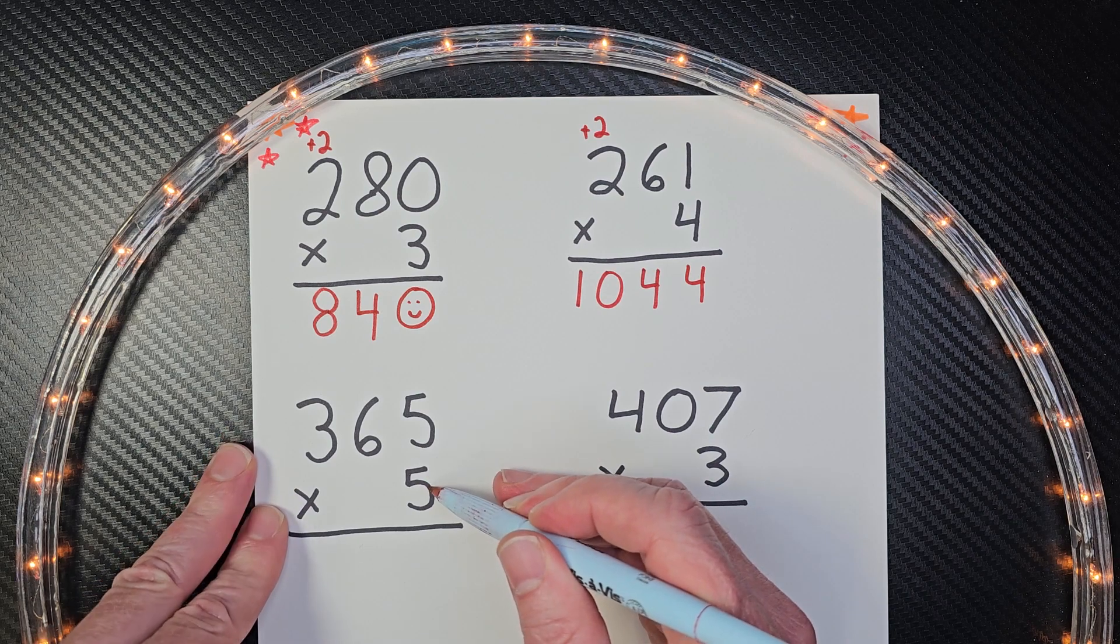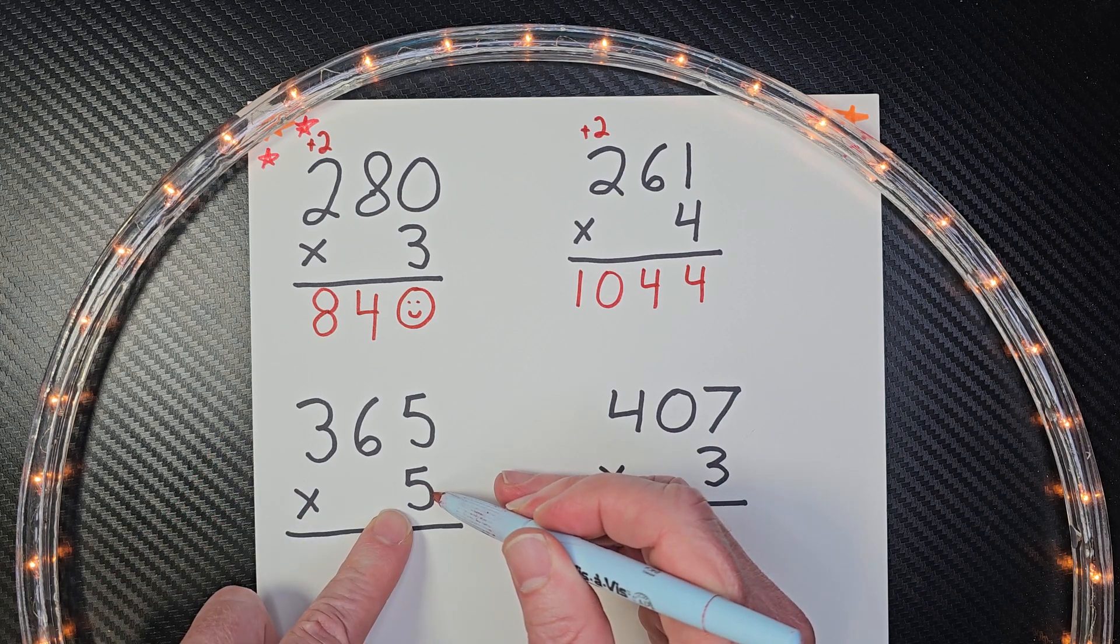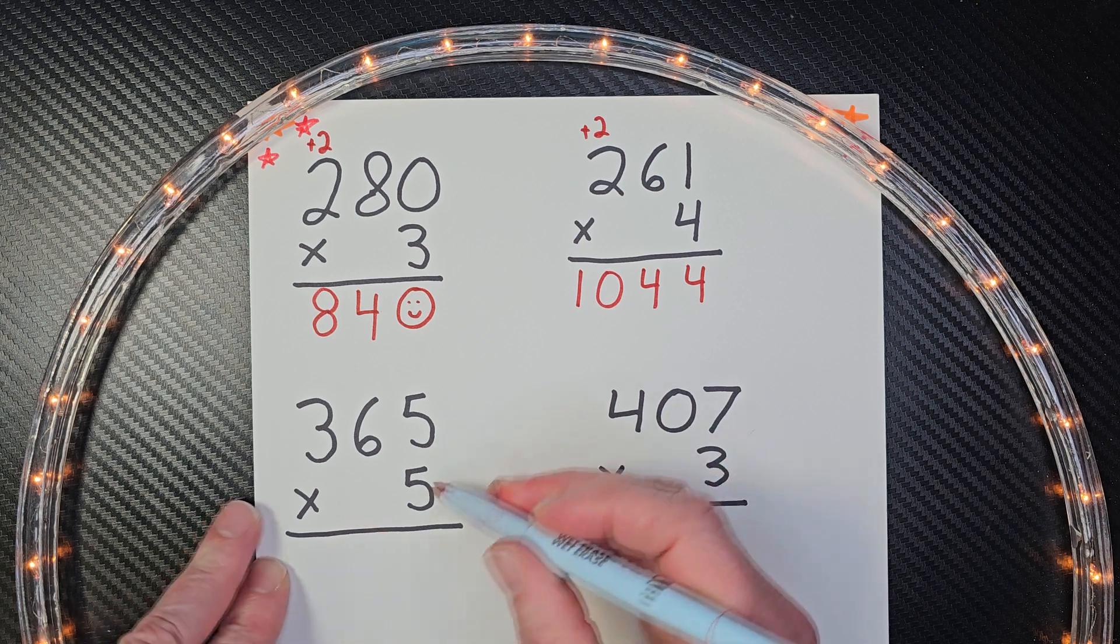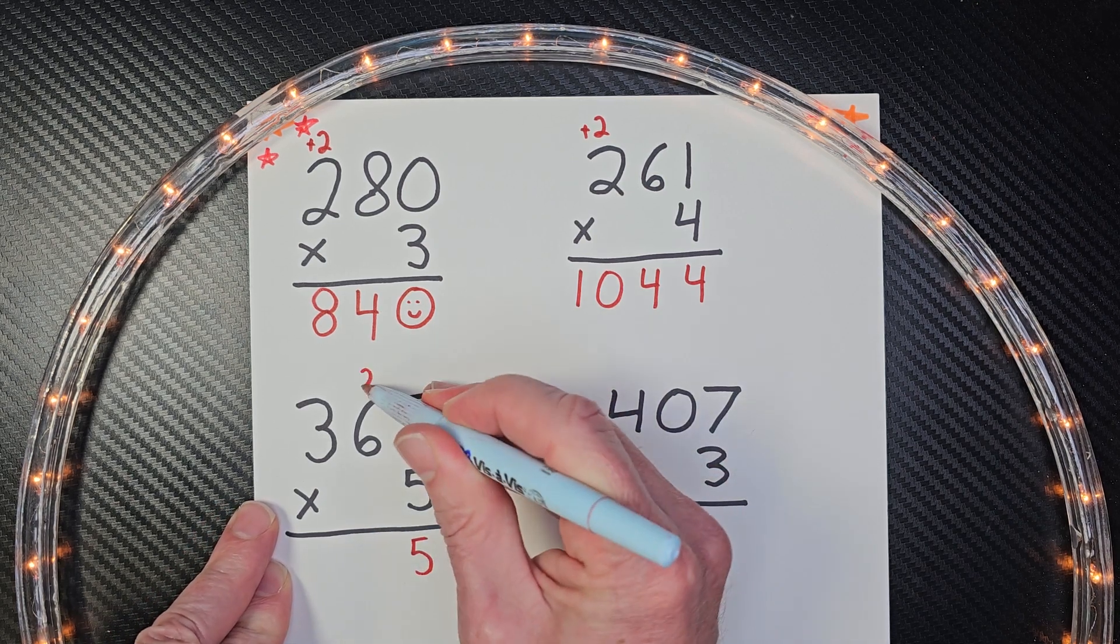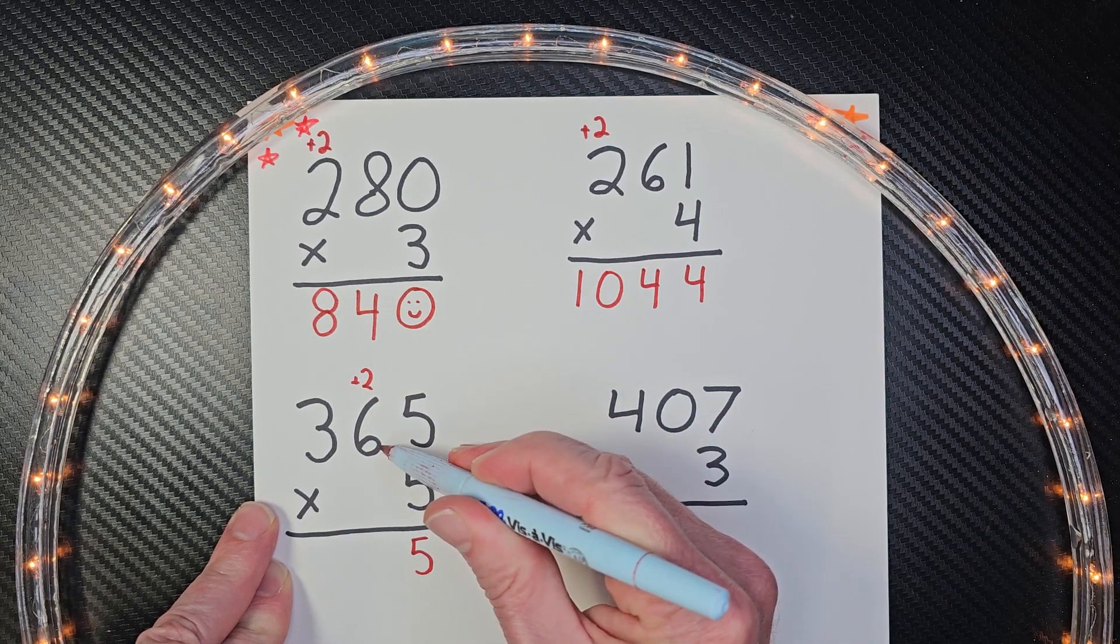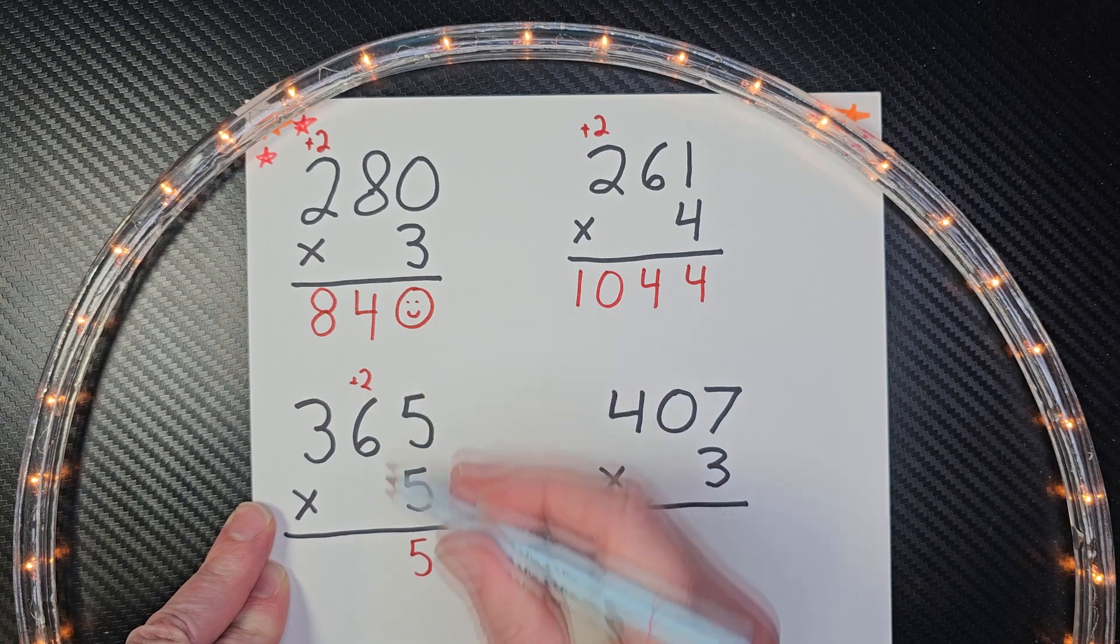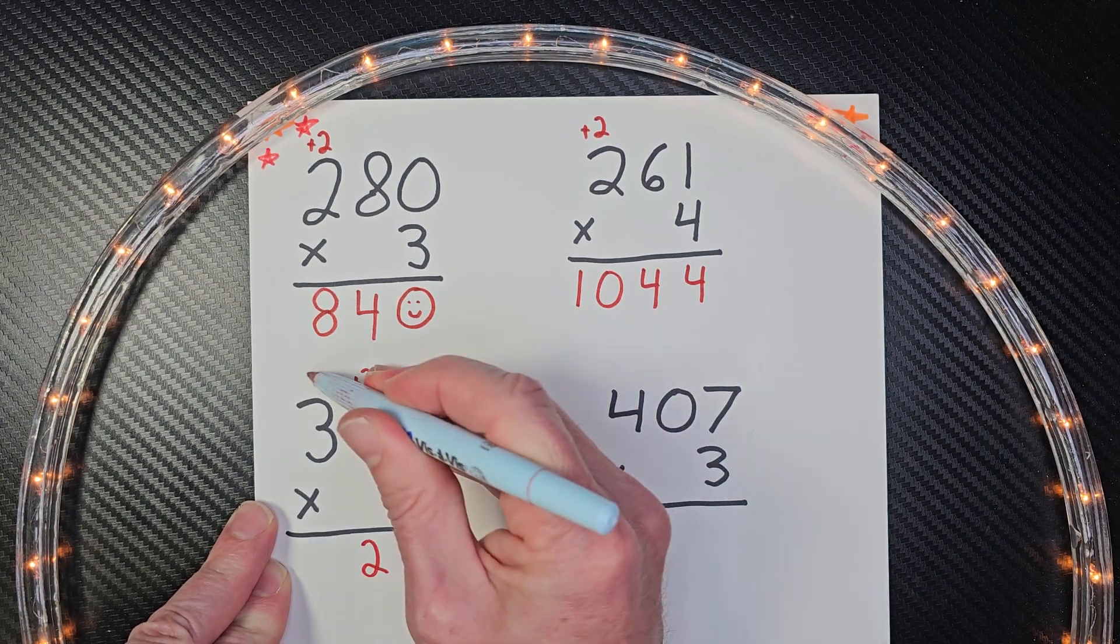All right, let's go ahead and multiply our fives. I like fives, don't you? Five times five is 25. Yeah. So put the two up here. Five times six, five, 10, 15, 20, 25, 30, 30, two. Put the two here, carry the three.